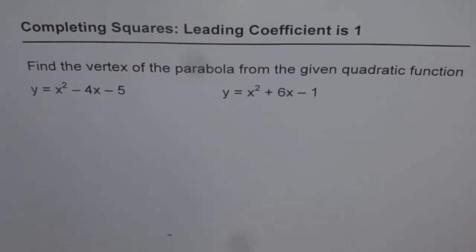Completing squares, leading coefficient is 1 in the given example. Find the vertex of the parabola from the given quadratic function. This is the very first one in a list of 4 in which we are trying to describe the process of completing squares by which we can convert quadratic function from standard form to vertex form. So here we have two questions. I will do one of them for you. The other one is the practice problem. Both are very similar and you have to adopt exactly the same steps.